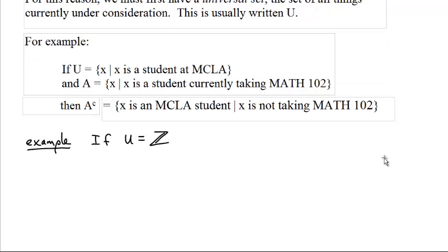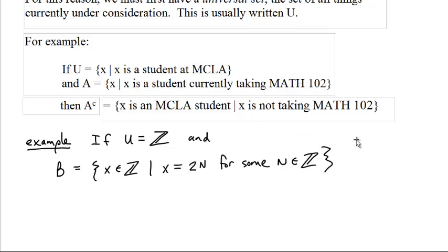As another example, suppose U is Z, the set of all the integers. That's what we're talking about. And the set B is the set of all X in Z, all integers, such that X is 2 times N for some N in the integers. So we only have the numbers that are 2 times an integer. That's also known as the even integers.